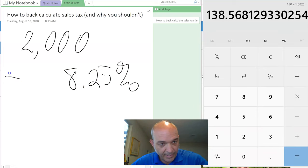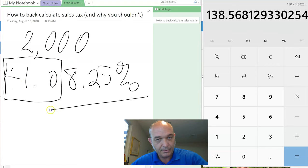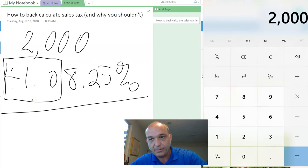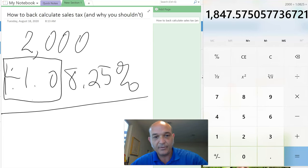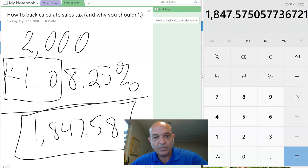$2,000 divided by 1.0825 equals $1,847.58. So you record a $1,847.58 sale.